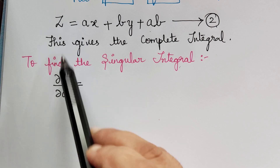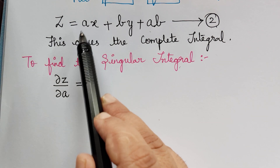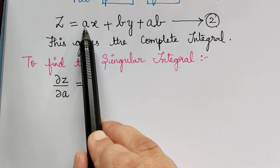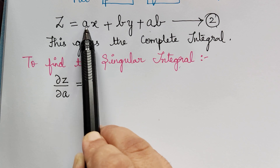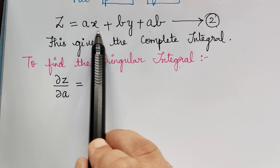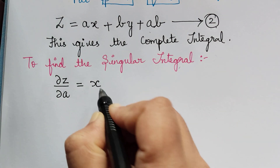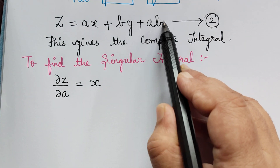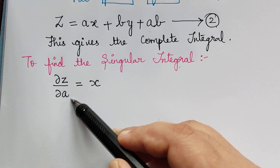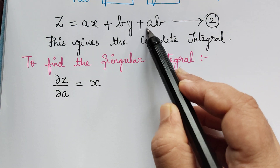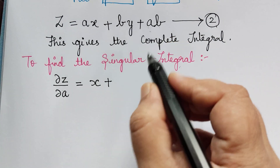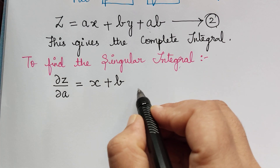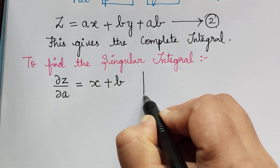When we differentiate equation 2 with respect to a, remaining terms are treated as constant. The differentiation of a is 1, so we get x. The term by is constant and becomes 0. For ab, b is treated as constant and differentiating a gives 1, so we get plus b. Therefore ∂z/∂a = x + b. Next, we have to find ∂z/∂b.